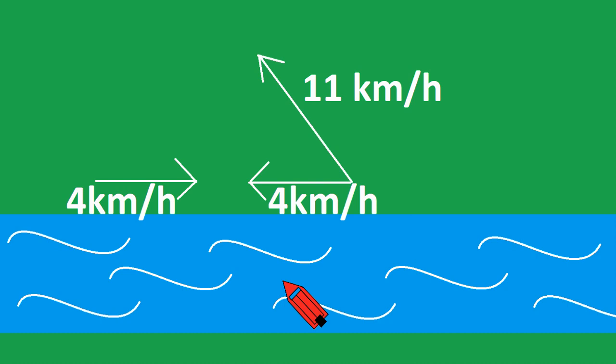So the boat is traveling at 11 kilometers an hour at a diagonal, and we want to make the horizontal vector cancel out the river vector of 4 kilometers an hour. In order to solve for the angle for this triangle, we have to use SOHCAHTOA.